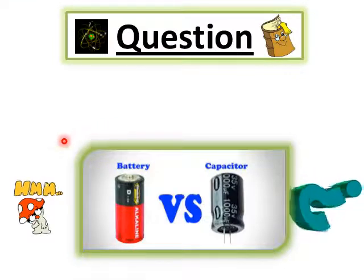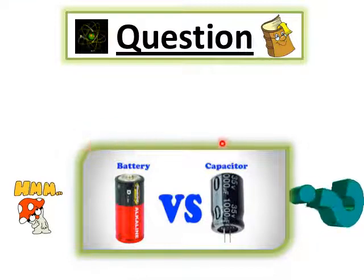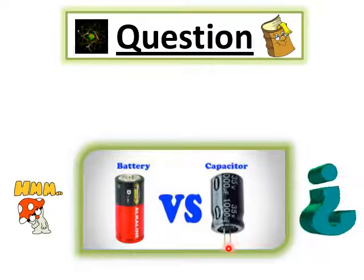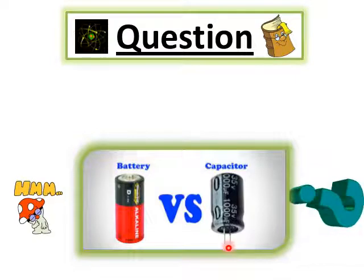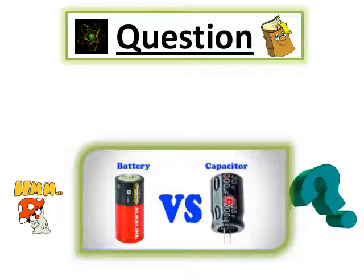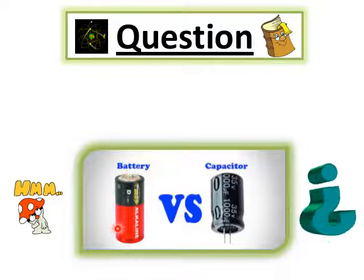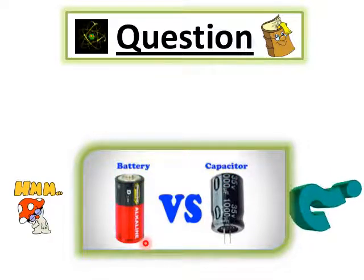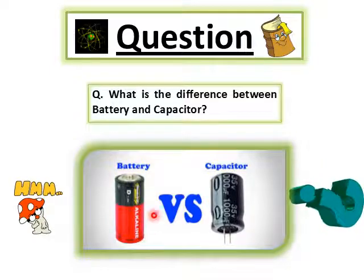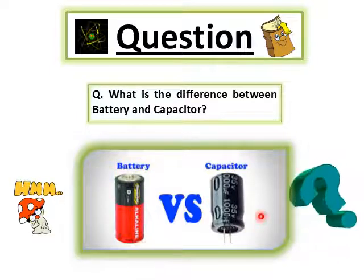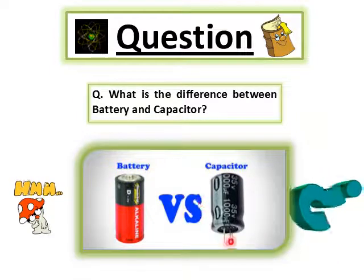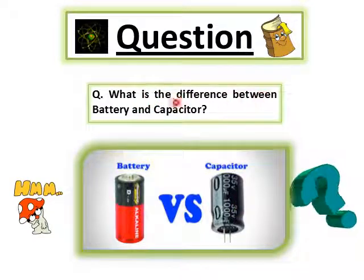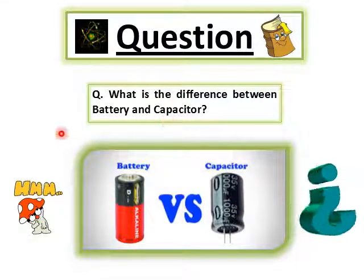Today we have a simple question. We know that a capacitor is a device used to store charges, and a battery also stores charges. So the question is: what is the difference between a battery and a capacitor?